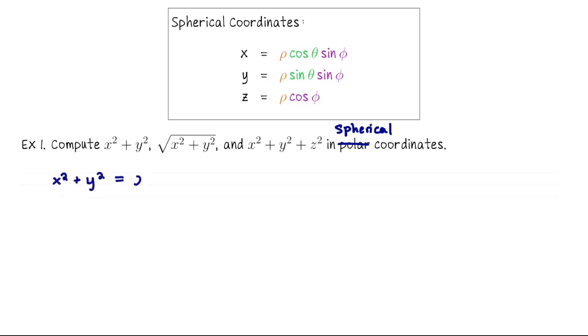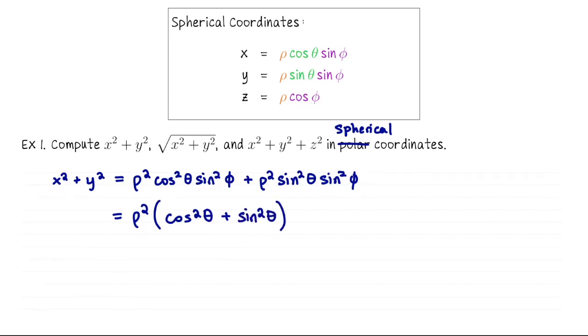That's going to be ρ² cos² θ sin² φ. And then y² similarly will be ρ² sin² θ sin² φ. Okay, I'm going to factor out the ρ² on the left and the sin² φ on the right so that I can write this as ρ² (cos² θ + sin² θ) sin² φ. Then cos² θ + sin² θ is 1, so this simplifies to ρ² sin² φ.